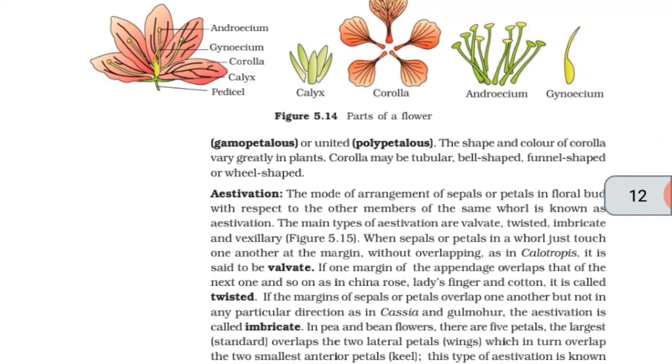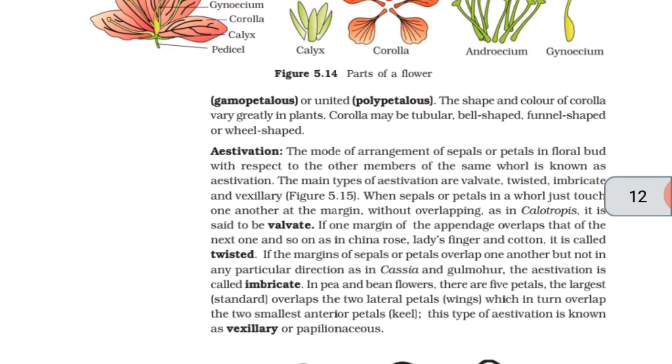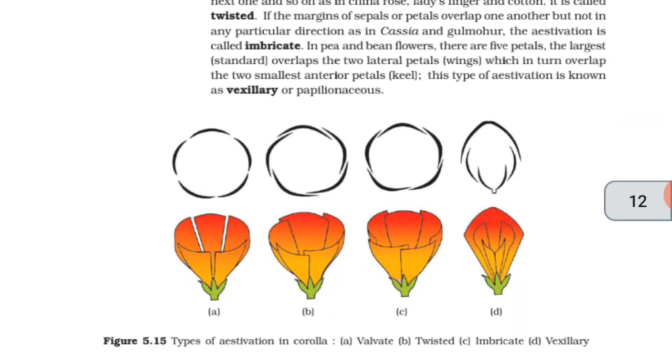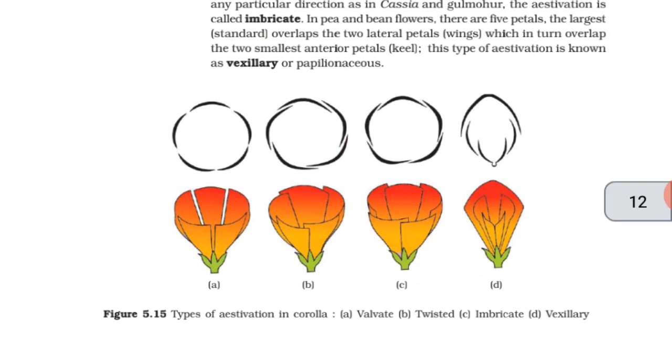Aestivation. The mode of arrangement of sepals or petals in floral bud with respect to the other members of the same whorl is known as aestivation. The main types of aestivation are valvate, twisted, imbricate, and vexillary. When sepals or petals in a floral bud just touch one another at the margin without overlapping, as in Calotropis, it is said to be valvate. If one margin of the appendage overlaps that of the next one and so on, as in china rose, lady's finger, and cotton, it is called twisted. If the margins of sepals or petals overlap one another, but not in any particular direction, as in Cassia and gulmohar, the aestivation is called imbricate. In pea and bean flowers, there are five petals. The largest standard overlaps the two lateral petals, which in turn overlap the two smallest anterior petals, keel. This type of aestivation is known as vexillary or papilionaceous.